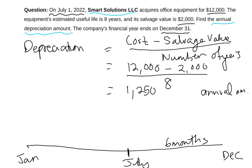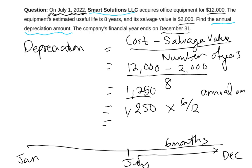If we had acquired it on January 1st, it would be the full 12 months and depreciation would be $1,250. But we only had this equipment for six months — half a year. So we calculate: $1,250 times 6 over 12, which gives us $625. That is our depreciation for this period.